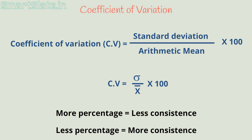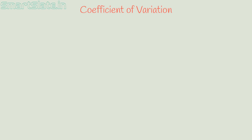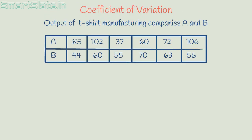Let me calculate the coefficient of variation of two sets of data. We have data output of two factories which manufacture t-shirts. This data is collected over six days.